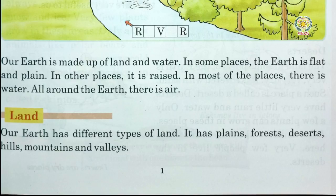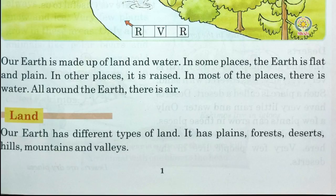Our earth is made up of land and water. In some places the earth is flat and plain; in other places it is raised. Almost 70 percent of our earth is covered with water and the rest is covered with land. All around the earth there is air.